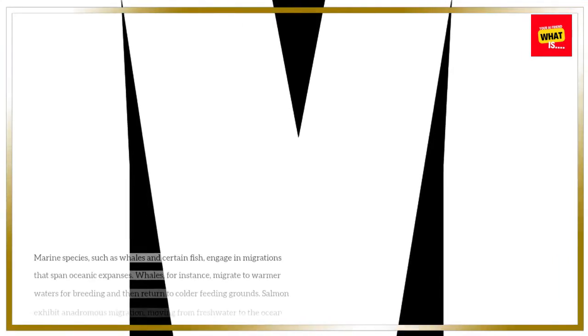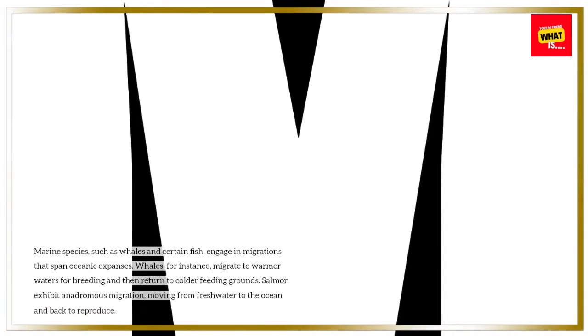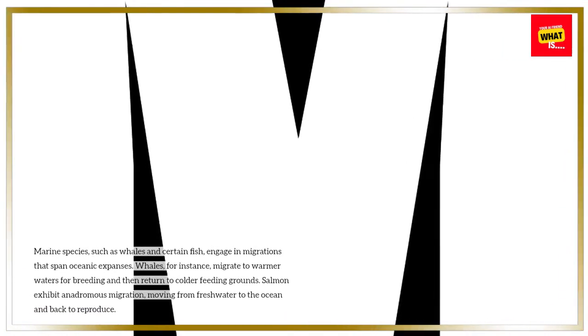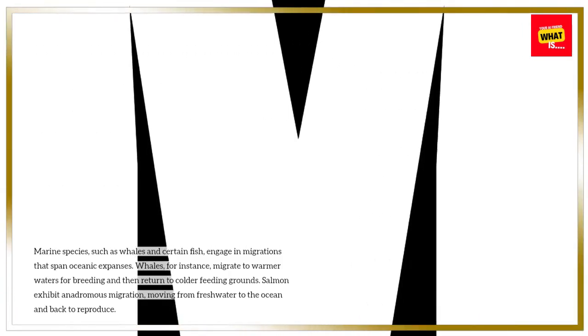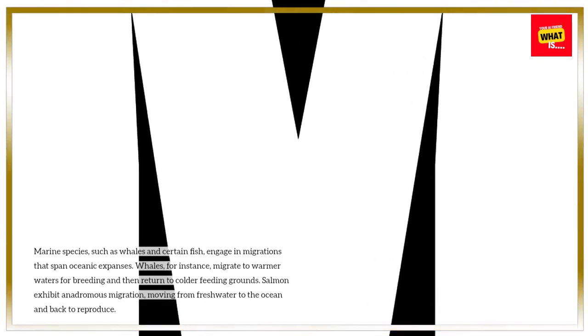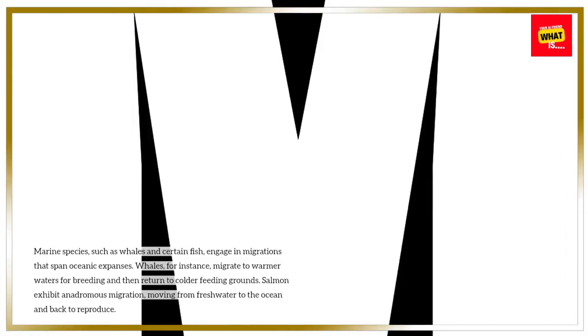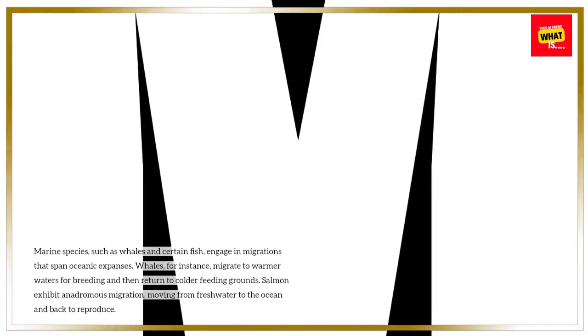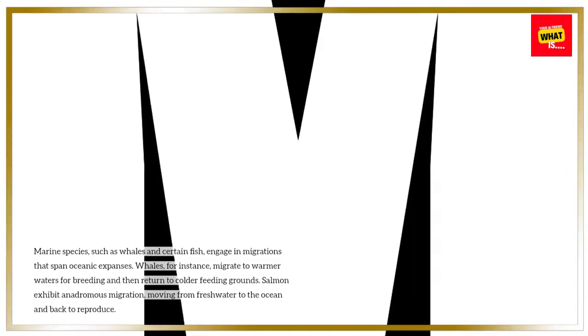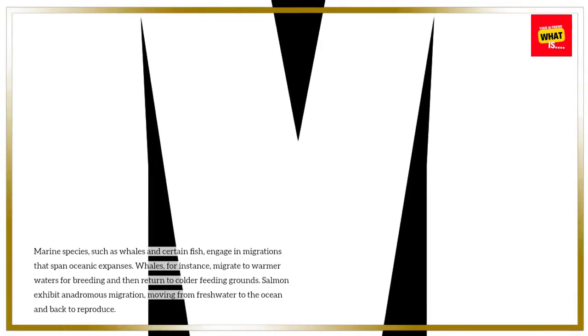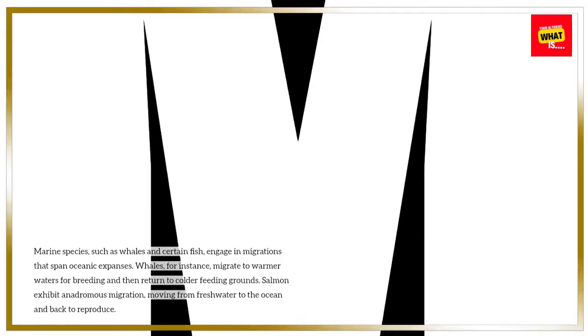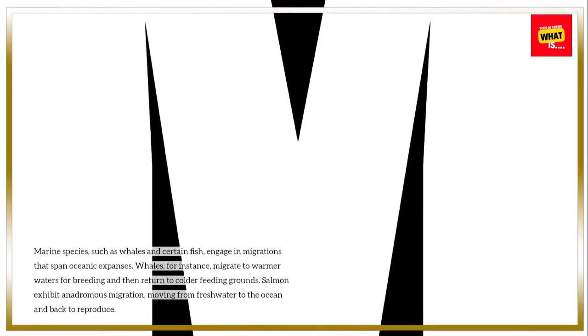Marine Migrations. Marine species, such as whales and certain fish, engage in migrations that span oceanic expanses. Whales migrate to warmer waters for breeding and then return to colder feeding grounds. Salmon exhibit anadromous migration, moving from freshwater to the ocean and back to reproduce.